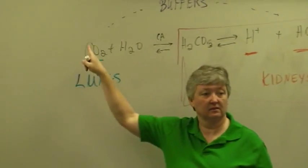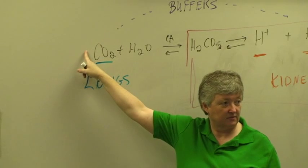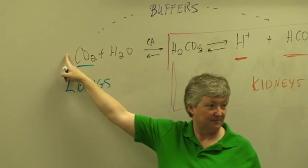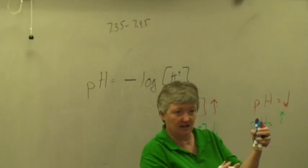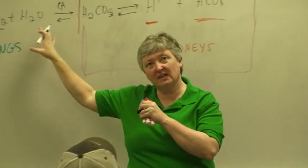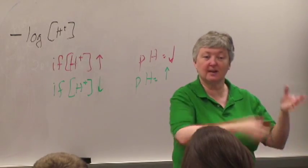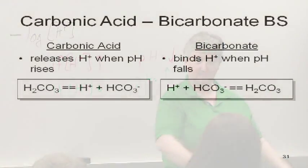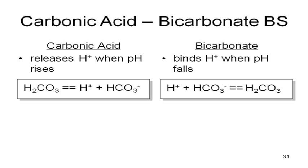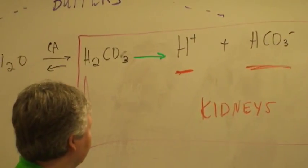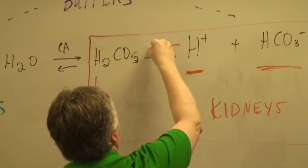The reason the kidneys keep us slightly basic is because we're always producing acid through cellular respiration. The kidneys are set up to keep us a little bit on the basic side to compensate for the fact that we're always producing a little bit of acid. Urine pH can vary widely because we don't really care what the pH of the urine is — we're trying to keep the blood pH balanced. If the pH goes up, we don't have enough hydrogen ions, so the reaction goes in the direction that produces more hydrogen. If pH is low, we have too many hydrogens, so we want hydrogen to combine with bicarbonate and form carbonic acid.